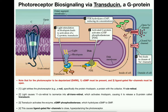Rhodopsin becomes activated and releases the G protein called transducin. Transducin translocates from rhodopsin over to an enzyme called PDE — cyclic GMP phosphodiesterase. The action of this enzyme is to hydrolyze or degrade cyclic GMP into regular GMP. Remember, in the dark, cyclic GMP must be present. But when there's light, we activate transducin, which activates phosphodiesterase, which gets rid of cyclic GMP by converting it to GMP.